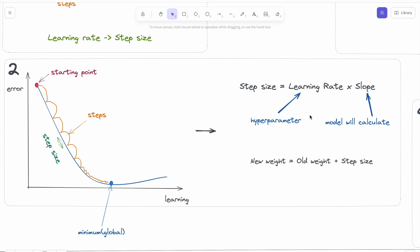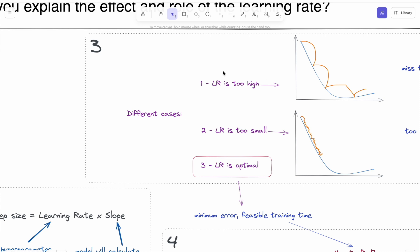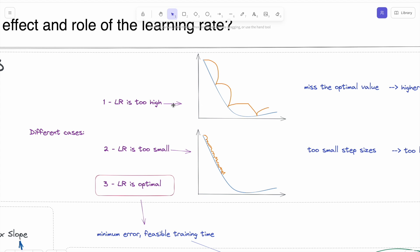To understand the effect of learning rate, let's look at different cases. This is a hyperparameter. It can be too high, too small, or it can be an optimal value.